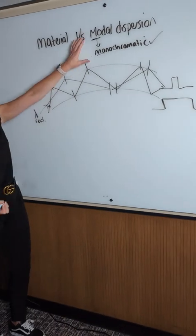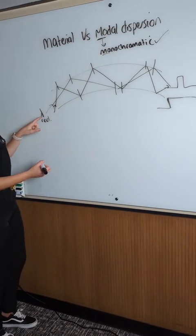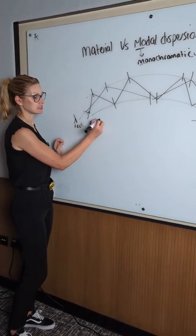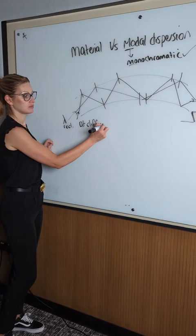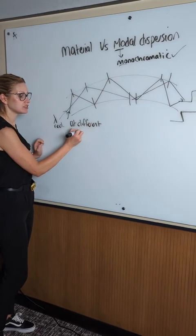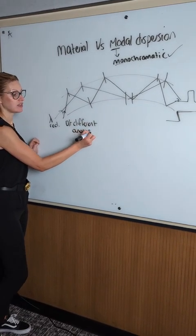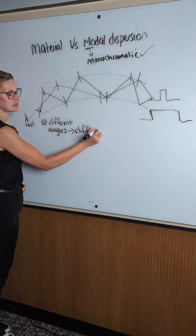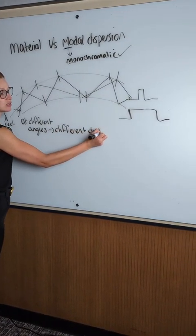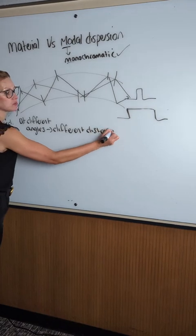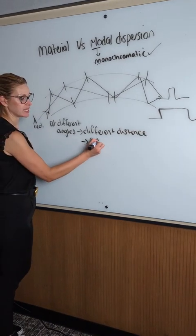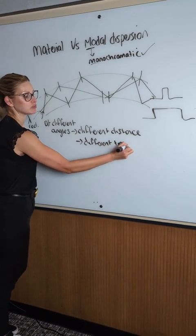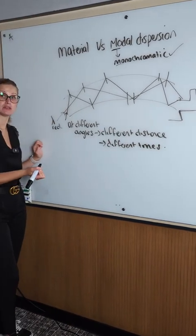So the problem with modal dispersion is that the rays are all coming in at different angles. And because they're coming in at different angles, they're then all traveling different distances, which means they're all arriving at different times. So my signal gets broadened, which I don't want to happen.